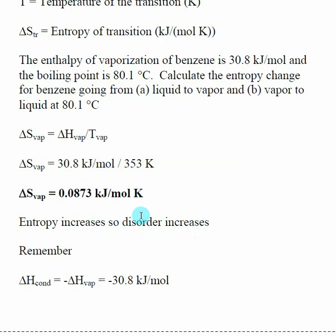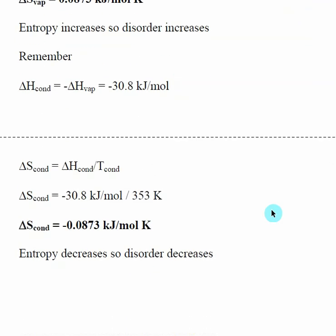Going in the other direction, things change — we get the mirror image. The ΔH of condensation is related to the ΔH of vaporization with a negative sign. Condensation means going from a gas to a liquid, so I need to put a negative sign on there. The ΔH of condensation is just the negative of the ΔH of vaporization. It's up to me to know I need that negative sign when looking at the entropy of transition for going from a vapor to a liquid. We're still using the same equation, and now the ΔH of condensation is −30.8 kJ/mol. The temperature of transition is the same, 353 K.